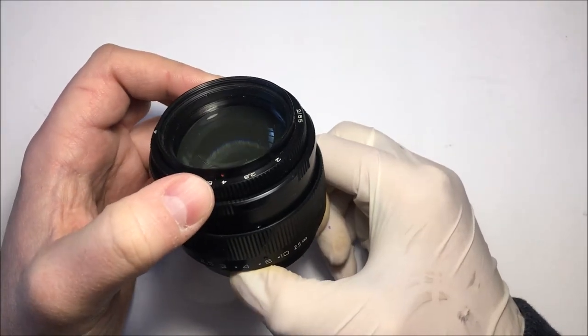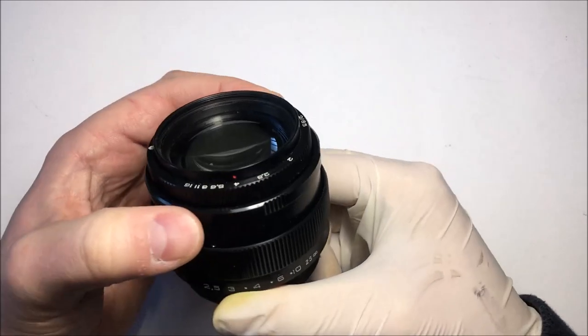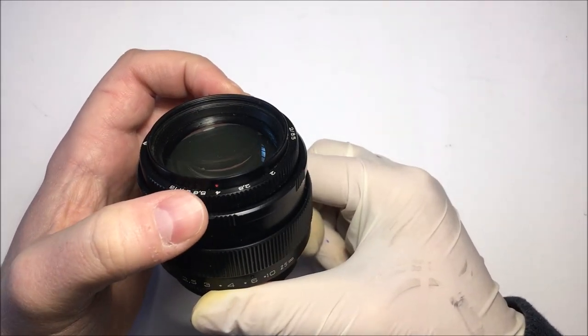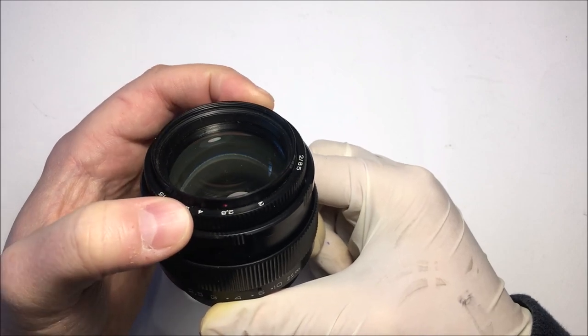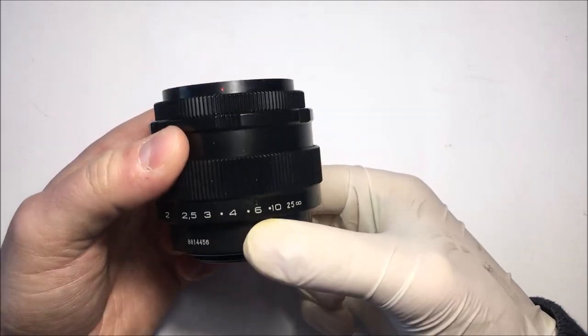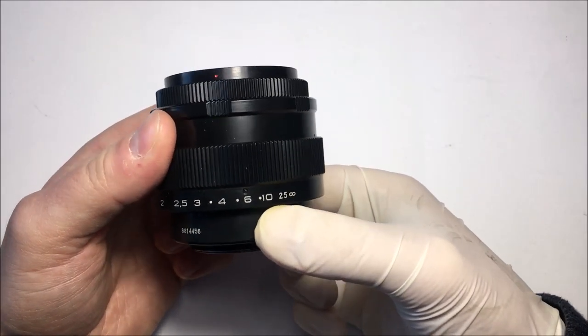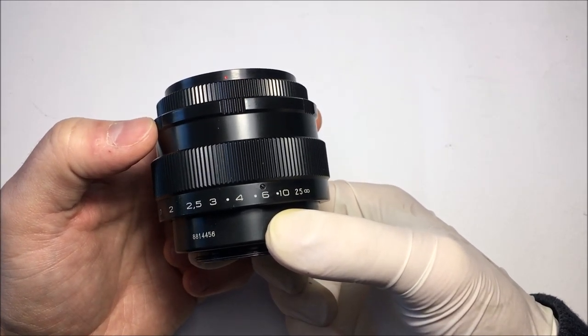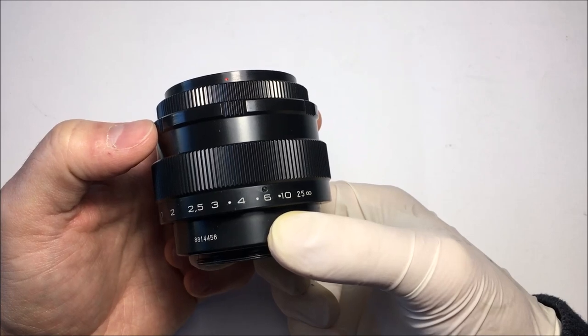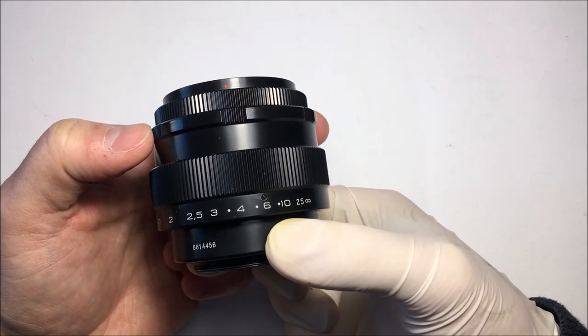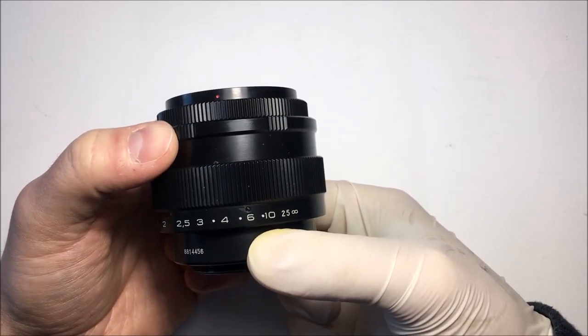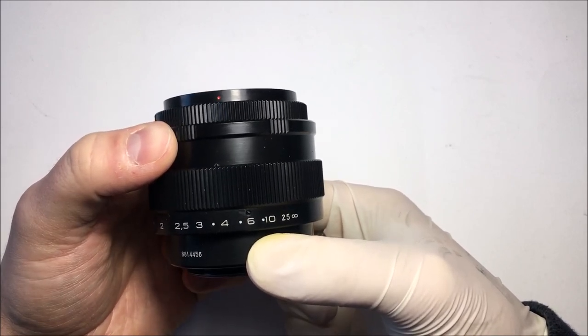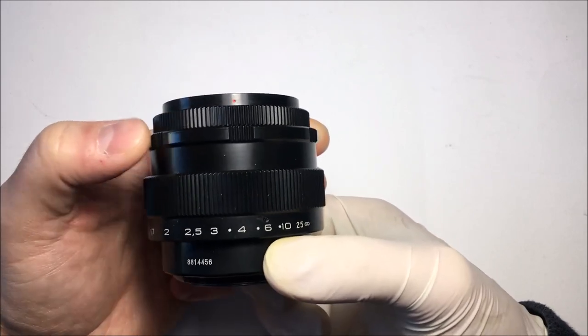For example, if you need to shoot at F 2.8, you select your value. You focus, and then you can look into your viewfinder or into your LCD screen. You just turn the ring like this and you know that you will stop at your desired aperture value. Like this, hop, and you have F at 2.8.